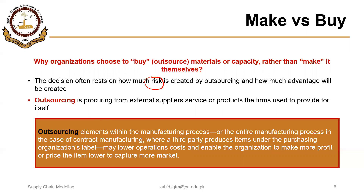Outsourcing is procuring from external suppliers services or products that the firm previously provided for itself. Generally, there are two types: an organization may outsource certain elements within the manufacturing process, or outsource the entire manufacturing process. When the entire manufacturing process is outsourced, this is called contract manufacturing, where a third party produces items under the purchasing organization's label. The ultimate goal is to lower operation costs and enable more profit or lower pricing to capture more market.